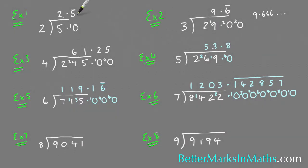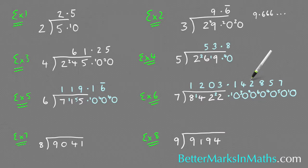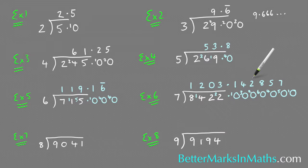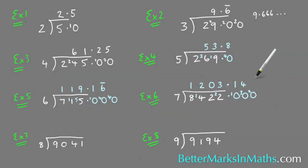I only want to round this to three decimal places. I want one, two, three numbers after the point. What I do is look at the next digit to the right of the third decimal place, and because it's five or more, I round that two up to a three. So the answer is 0.143 to three decimal places.